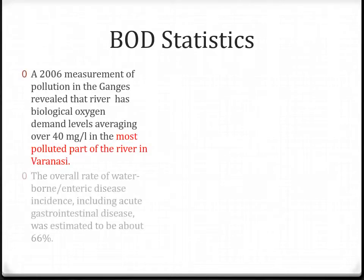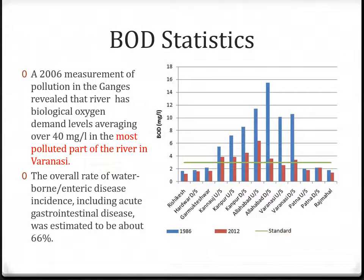Biological oxygen demand statistics: A 2006 measurement of pollution in the Ganga revealed that the river has biological oxygen demand levels averaging over 40 mg per litre in the most polluted part of the river in Varanasi. Here we have a graph showing the biological oxygen demand with cities. Allahabad has the highest biological oxygen demand of over 14 in 1986.